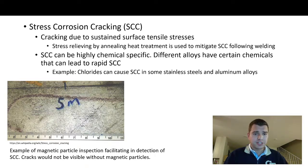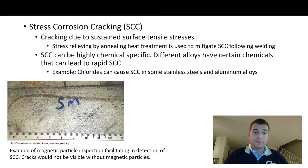This picture shows one of the common tests used for detecting cracking — magnetic particle testing (MT). Magnetic particles placed on the metal surface can detect cracks not visible to the naked eye. The two most common tests for this kind of cracking are magnetic particle testing and dye penetrant testing.